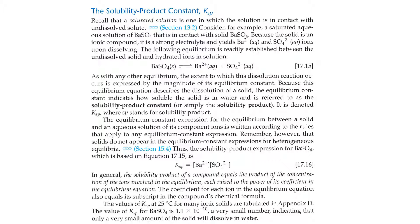The solubility product constant, K-sub-sp. Recall that a saturated solution is one in which the solution is in contact with undissolved solid. Consider, for example, a saturated aqueous solution of barium sulfate in contact with solid barium sulfate. Because the solid is an ionic compound, it's a strong electrolyte and yields barium ions and sulfate ions upon dissolving. The equilibrium constant for this dissolution reaction is called the solubility product constant, or simply the solubility product.